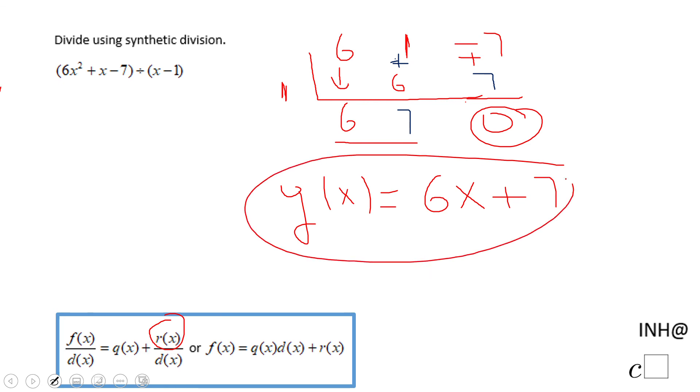So that's q of x, and like I said, the r of x, the remainder, in this case it's 0. And that's it.